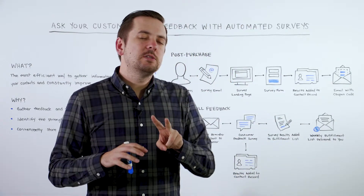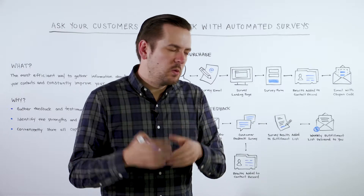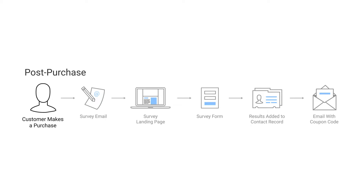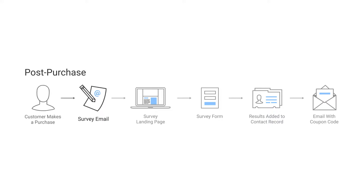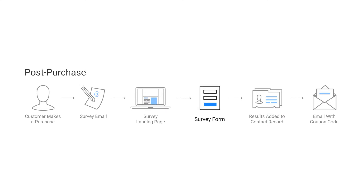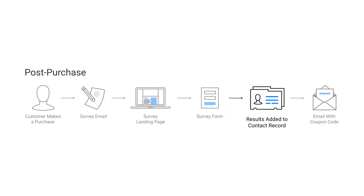Here are two ways you can start to gather this feedback in the real world. The first one is a post-purchase survey. So after they've made a purchase, the goal here is to get really good feedback on your marketing materials and your product as a whole. If a customer makes a purchase, we send them an email with a link to the survey in it. On the landing page for the survey, we have our form, and when they fill it out, we add that information to the contact record.